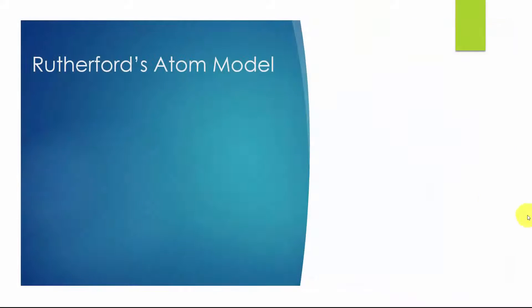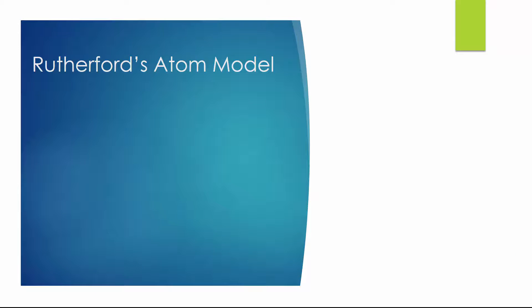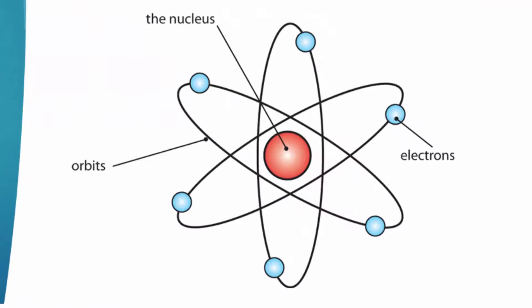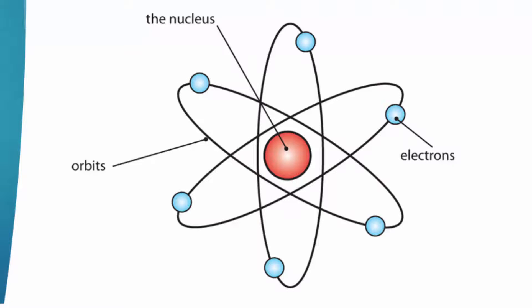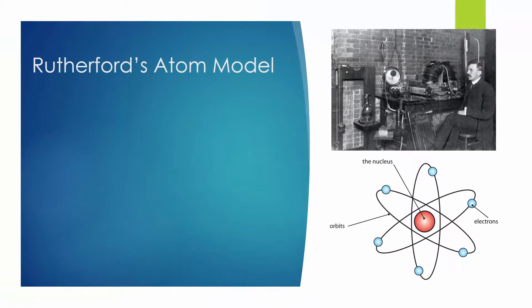In the early 1910s, the common model of atoms was Rutherford's atom model, as shown in this picture. Rutherford's atom model is like the solar system, with a positively charged nucleus at the center and negatively charged electrons circling around the nucleus. In this model, electrons can take any orbit, they can continuously move closer to or further away from the nucleus.